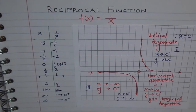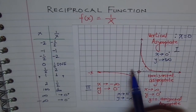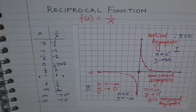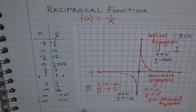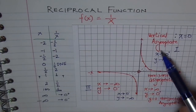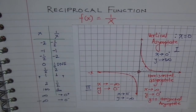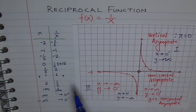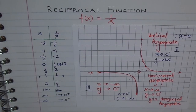Among all the parent functions you are going to study, the reciprocal function is the only one which has two asymptotes. Can you tell me another parent function which has one asymptote? It has a horizontal asymptote — that is the exponential function. For example, 2 to the power x: when x is a very large negative value, you approach 0. The reciprocal function also has a restriction on its domain, unlike most functions, except for the square root function.